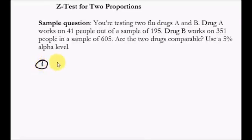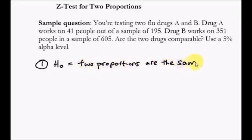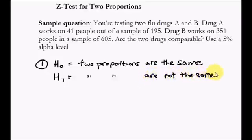The first step is we want to write our hypothesis statements. The null hypothesis for the Z-test for two proportions is always that the two proportions are the same. And the alternate hypothesis is that the two proportions are not the same. In other words, the alternate hypothesis is that there's some kind of significant difference between the two proportions.